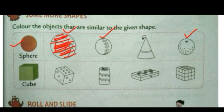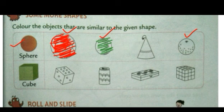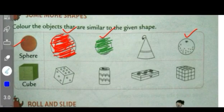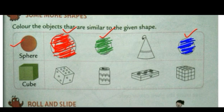We need to color the objects that are similar to the given shape. You can use any color. I will use green to color the second object. We only have to color the objects that are similar to the given shape. I will use blue color to color the orange.